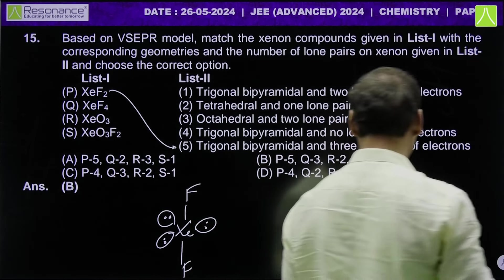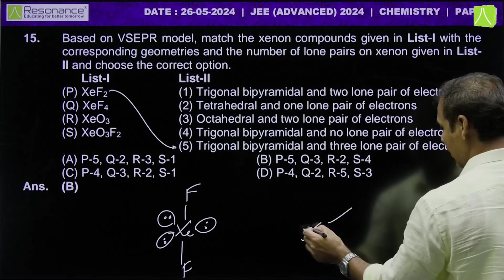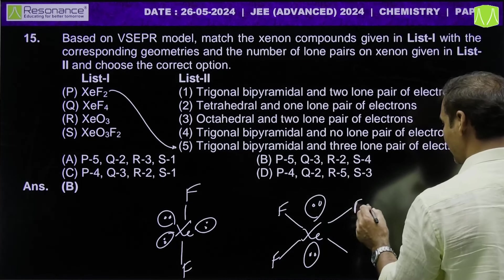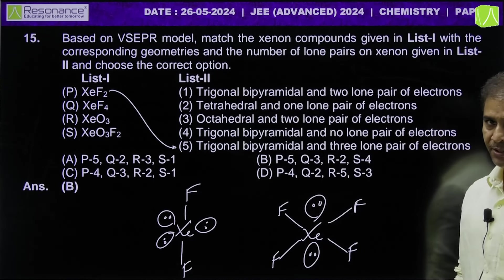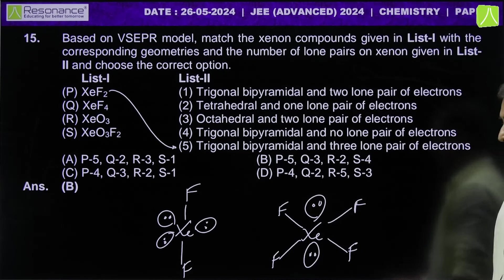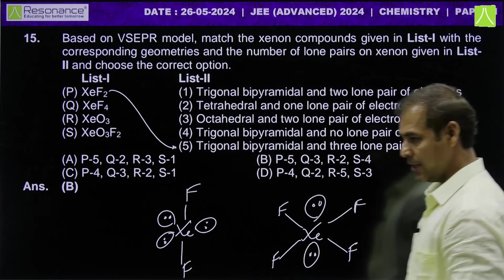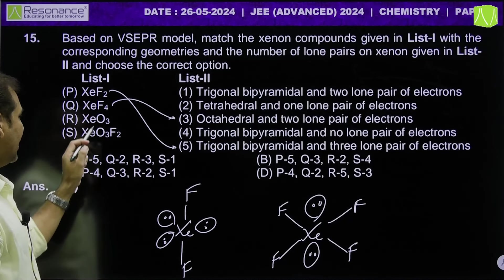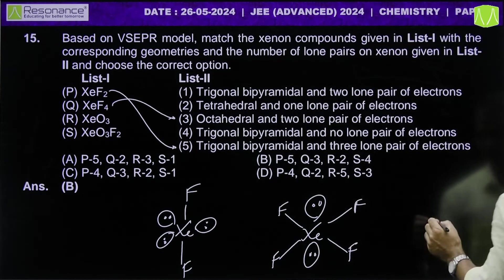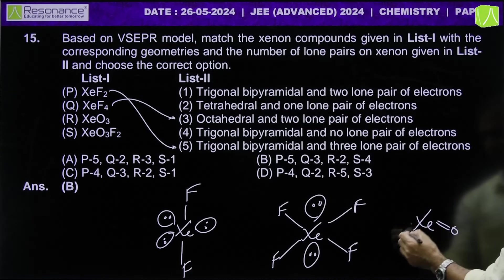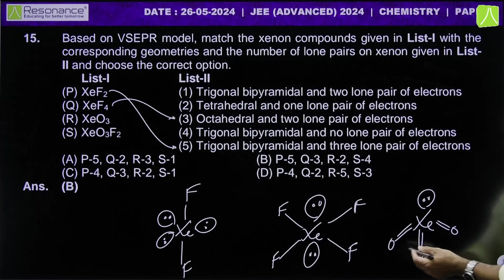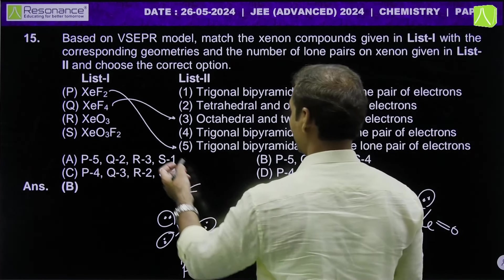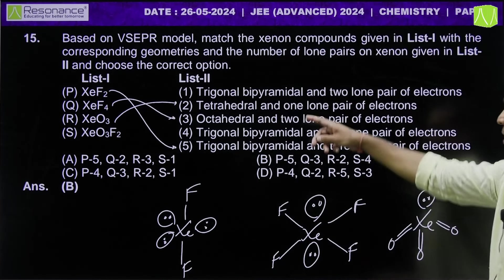XeF4: 2 lone pairs, which go to opposite positions to minimize repulsion. Four fluorines in one plane — shape is square planar, geometry is octahedral with 2 lone pairs. XeO3: three oxygens with double bonds, one lone pair remaining. Shape is pyramidal, geometry is tetrahedral with 1 lone pair.